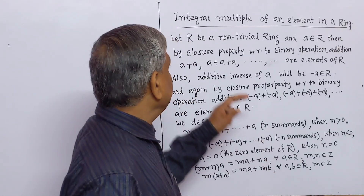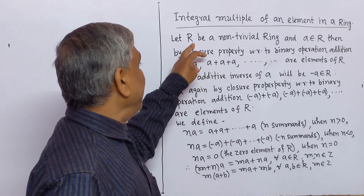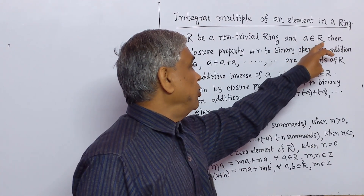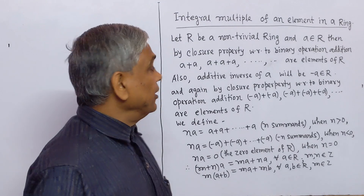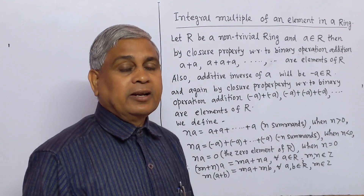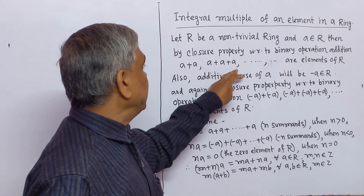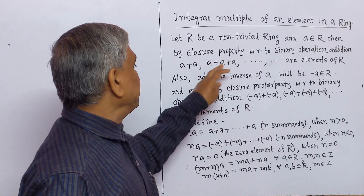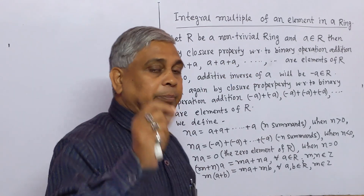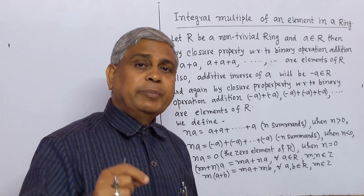Firstly, we describe about the integral multiple of an element in a ring. Let R be a non-trivial ring and let small a be an element of ring R. Then by the closure property with respect to binary operation addition, a plus a belongs to R, a plus a plus a belongs to R, and so on — all are elements of the ring R.